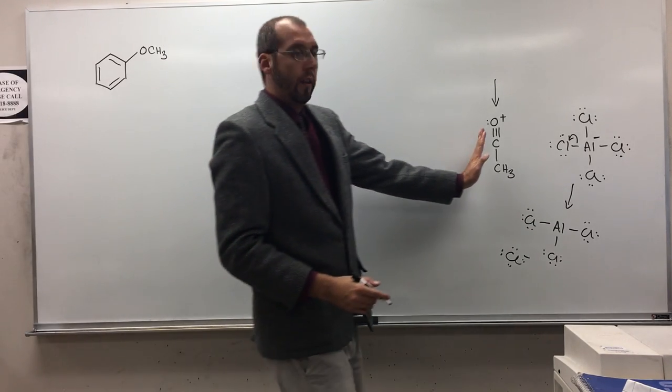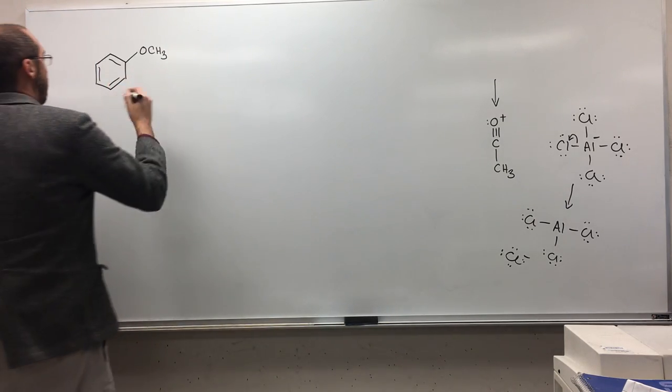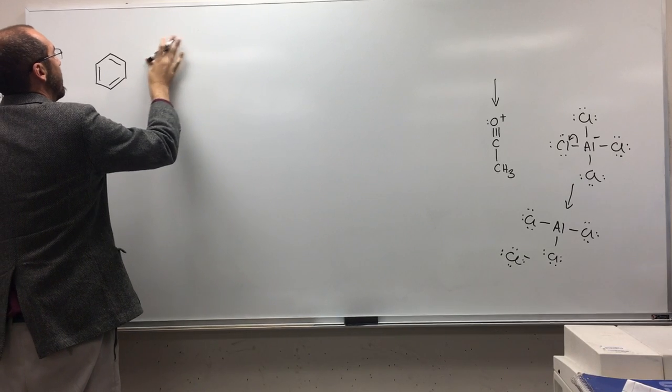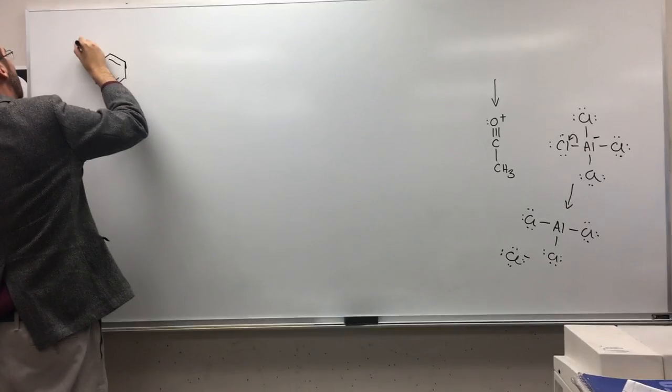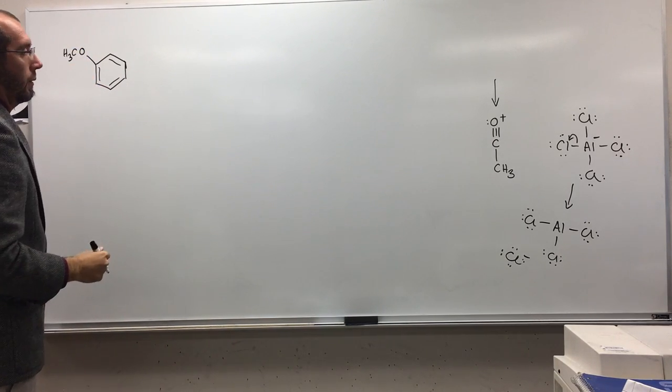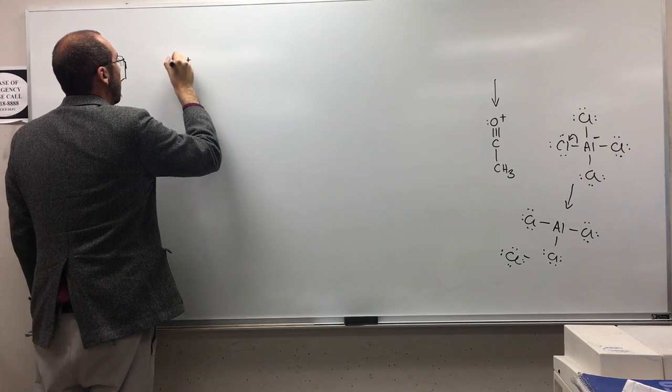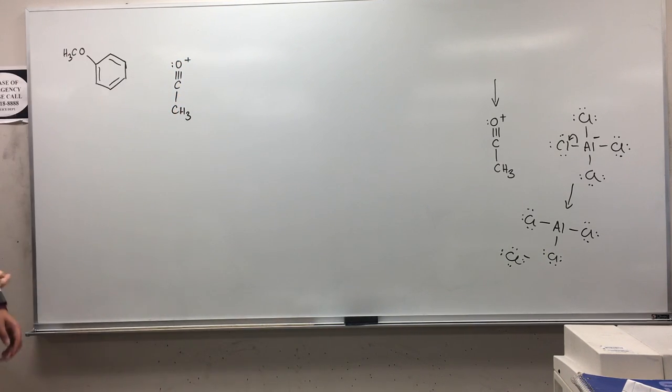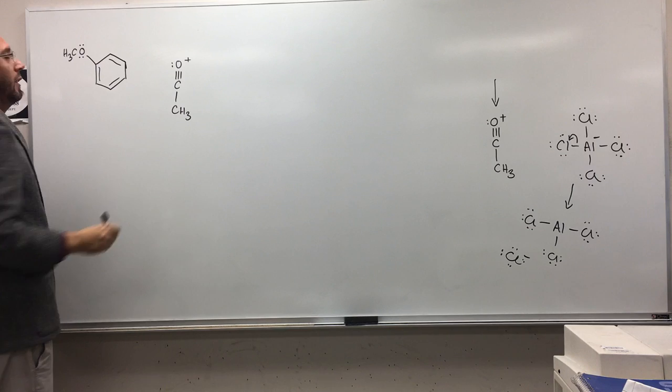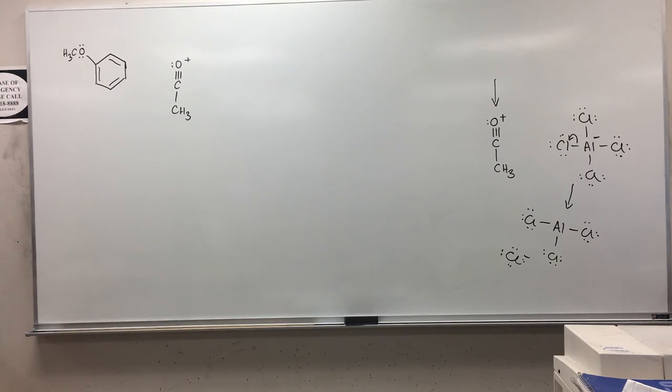So now this is going to react with this, okay? I'm just going to write this in an easier structure to work with. It's the same compound, of course. Okay. So remember the methoxy group here with its electrons, alpha to the benzene ring, is going to be an electron donating group, right? So that's going to... we're going to predict that the product would be either in the what positions? Do you remember? Ortho or para, okay?